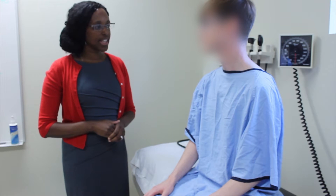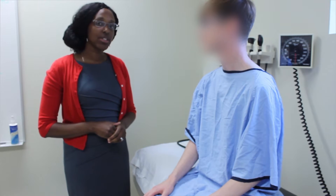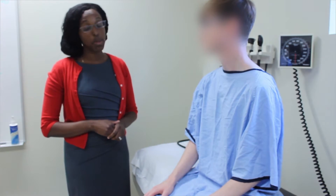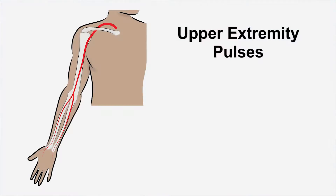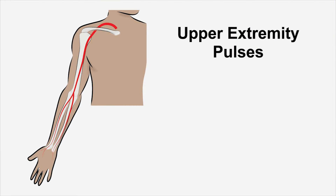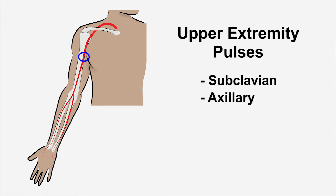The examination of the upper extremity involves the examination of all the peripheral pulses of the arm. It's important to examine all levels, as a patient can have occlusive proximal disease and still have a palpable pulse at the level of the wrist. That is because the arm, unlike the leg, collateralizes so well. The points we'll be looking at today would be the subclavian, the axillary, the brachial, the radial, and the ulnar.